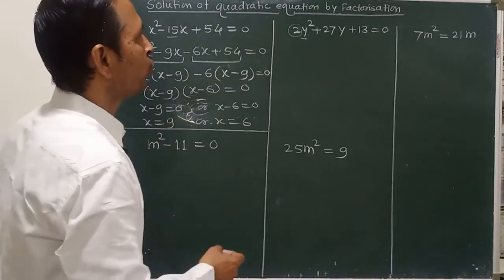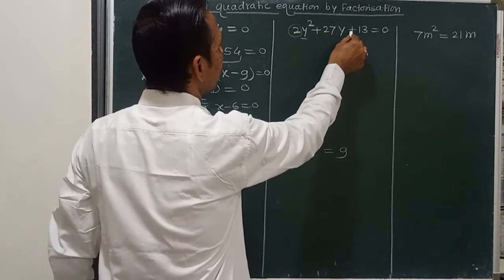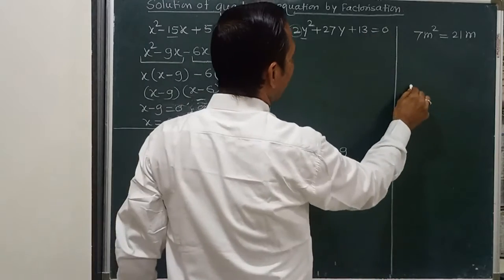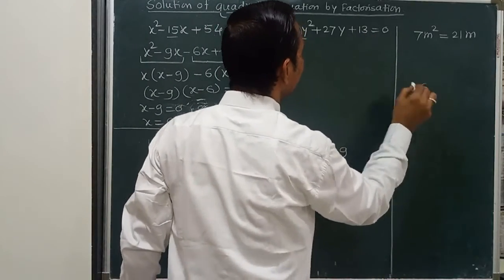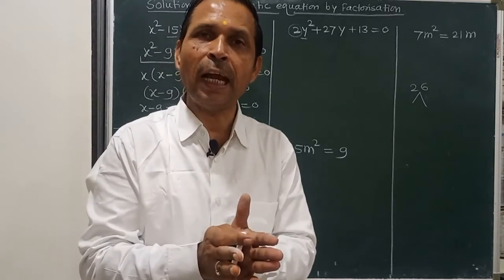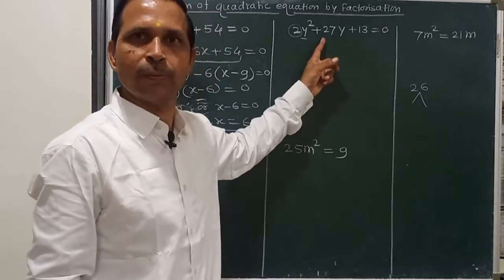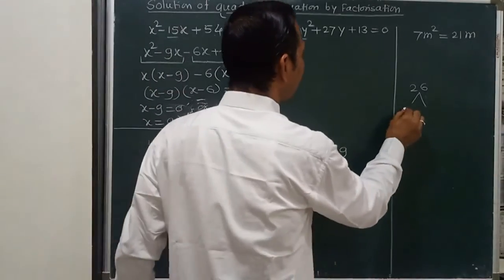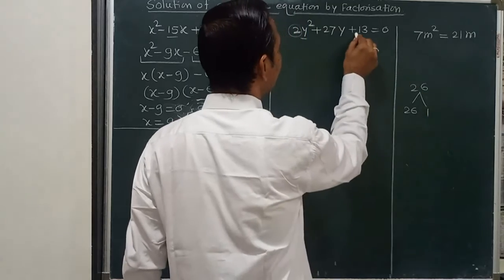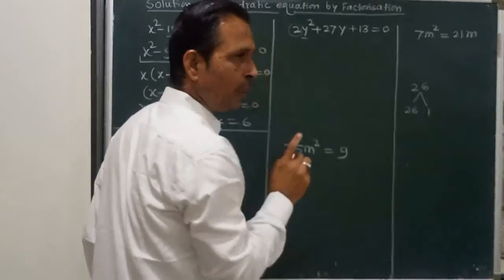Now let us find the solution of the next equation: 2y squared plus 27y plus 13 equals 0. Multiply 2 into 13; the product is 26. Split 26 in such a way that the product is 26 and the sum is 27. We can use 26 and 1, since 26 times 1 is 26 and 26 plus 1 is 27.